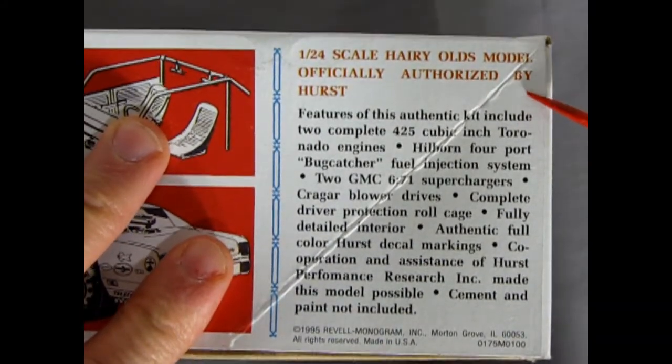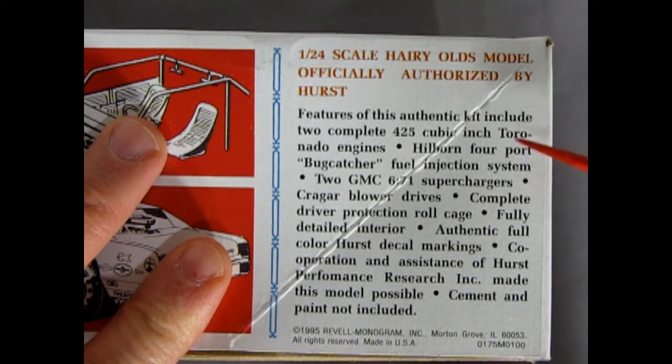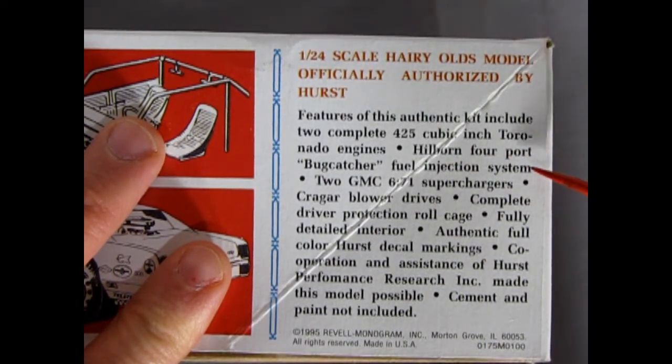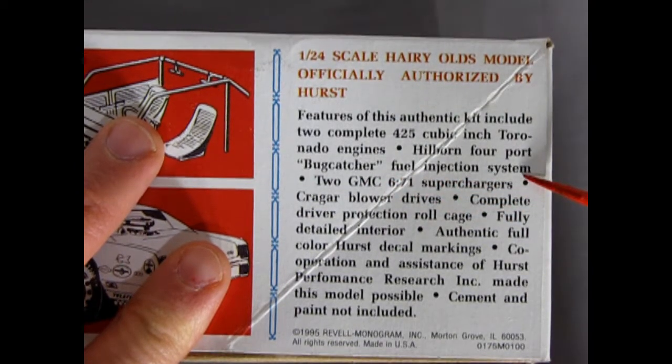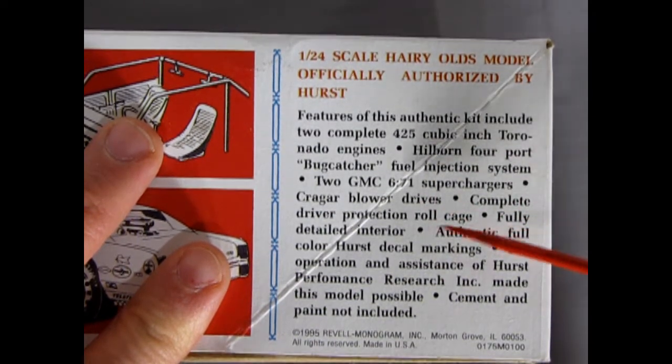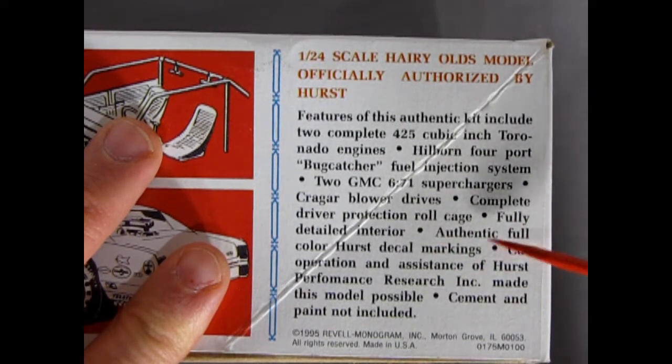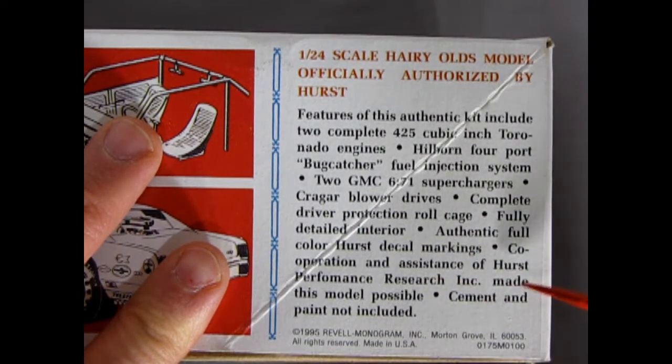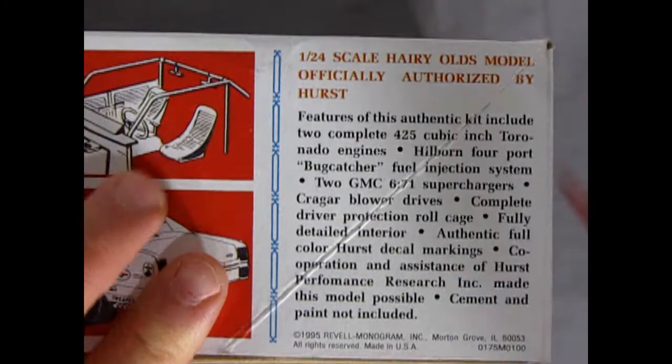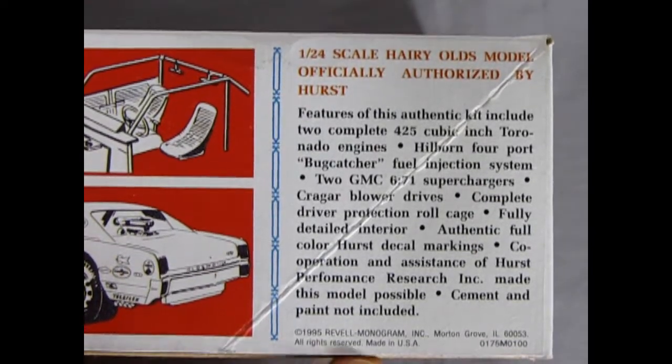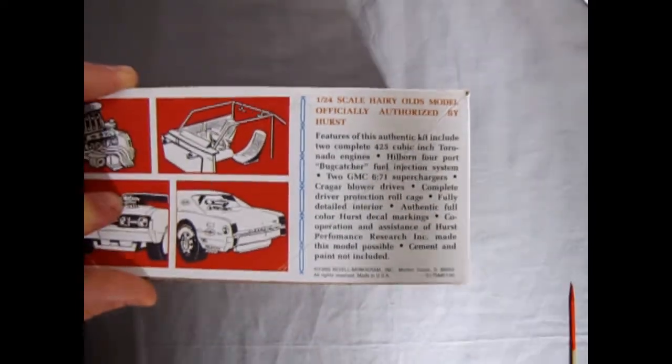1:24 scale Hurst-Harry-Olds model officially authorized by Hurst. Features of this authentic kit include two complete 425 cubic inch Tornado engines, Hilborn four port bug catcher fuel injection system, two GMC 6-71 superchargers, Cragar blower drives, complete driver protection roll cage, fully detailed interior, authentic full color Hurst decal markings. Cooperation and assistance of Hurst Performance Research Incorporated made this model possible. Cement and paint not included. Oh here we go 1995 Revell Monogram. So it's not an original it is a reproduction but man you wouldn't know that. And again no barcode on here.